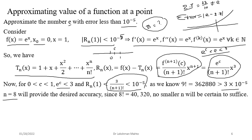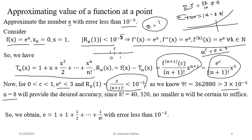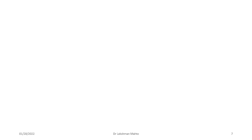So n = 8 is our solution. We substitute n = 8 into the Taylor polynomial, giving T₈(x). Evaluating at x = 1, T₈(1) gives an approximate value of the Napier constant e, and in the process of approximating e by T₈ at x = 1, the error is less than 10^(−5). This is the desired approximated value of e with the required accuracy.